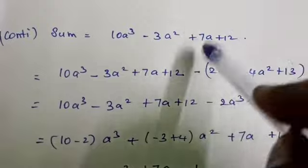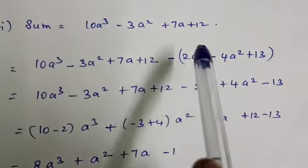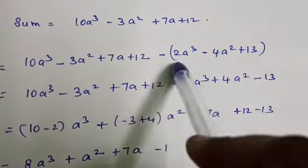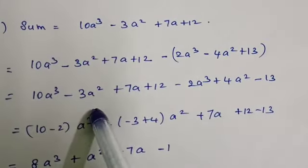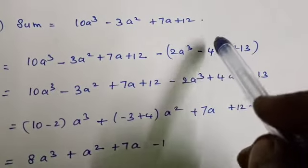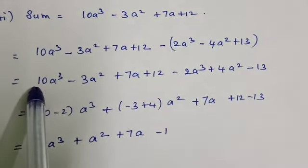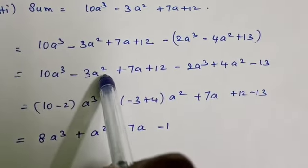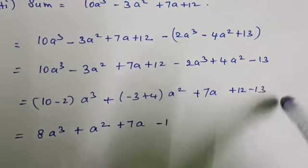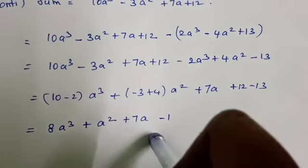Now we have the sum. The sum is the 'from' number, so we write: (10a³ minus 3a² plus 7a plus 12) minus (2a³ minus 4a² plus 13). After the minus symbol, all signs in the bracket change. So: minus 2a³, minus 4a² becomes plus 4a², and plus 13 becomes minus 13. Combining like terms: 10 minus 2 gives 8a³, minus 3 plus 4 gives plus a², then plus 7a, and 12 minus 13 gives minus 1.